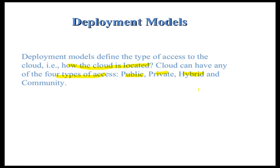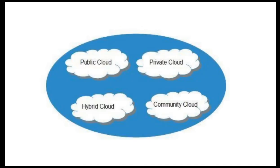To summarize the deployment model: community cloud means everyone in a group can access the data. Hybrid cloud is a combination of private and public. Public cloud means anyone can access the data. Private cloud means only an individual or an organization can access the data.